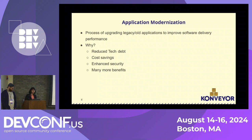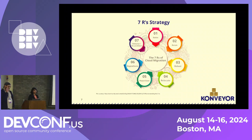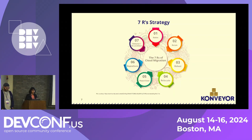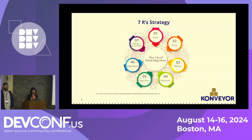AWS recently updated their migration strategy framework to include seven R's. We'll assume that workloads have already been assessed and prioritized. The first strategy is Retire — if it's not needed anymore, just switch off the VM. The second is Retain — if it's going to be too expensive or resource-intensive to change, just leave it as is.